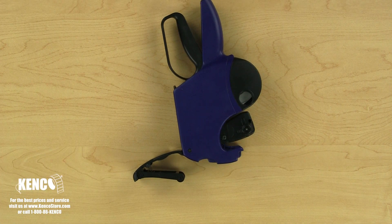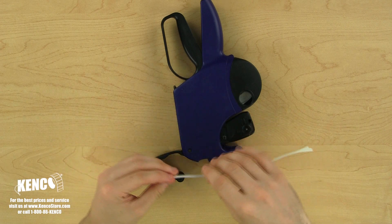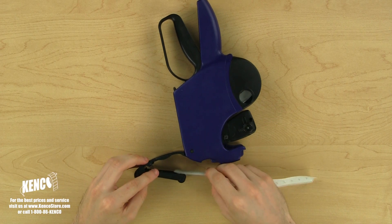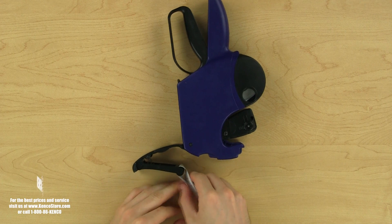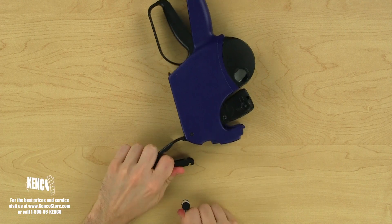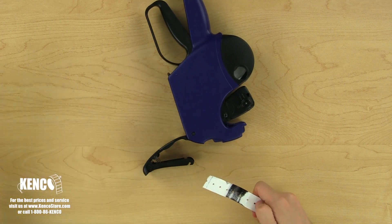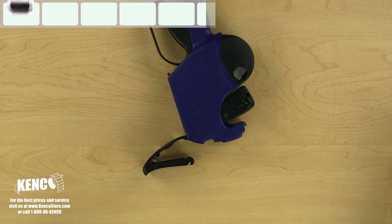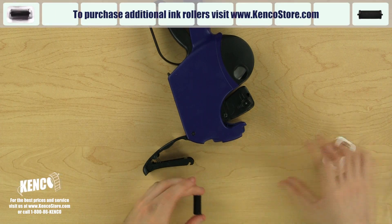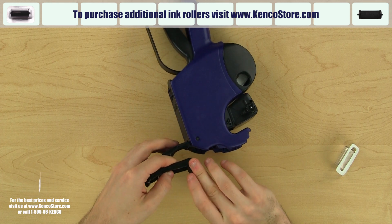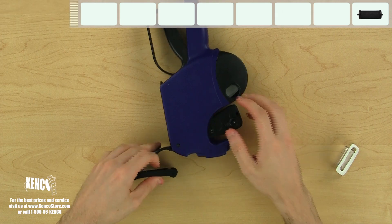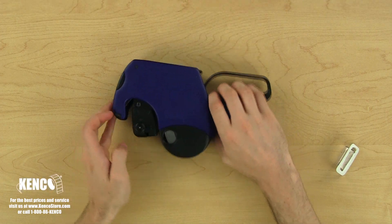The easiest way to remove the old ink roller is by using extra label liner to pull the ink roller off of the ink roller assembly. Once the ink roller is removed, we will get a replacement ink roller from its packaging and snap it into the ink roller rod on both sides. Additional ink rollers can be purchased from KencoStore.com. Now that we've put the new ink roller in, we just need to close the ink roller assembly door.